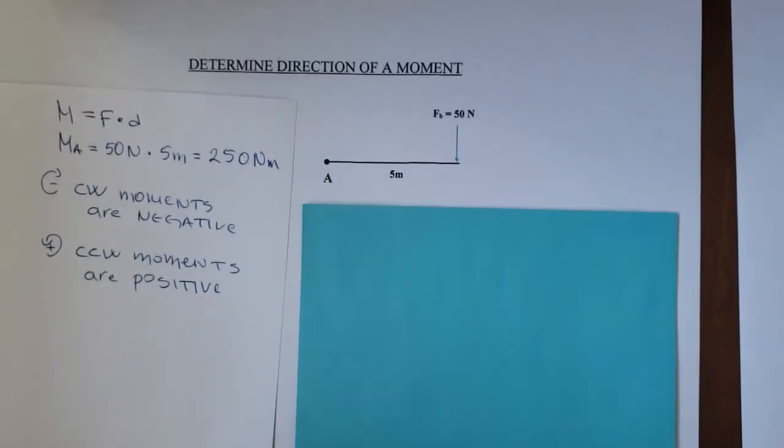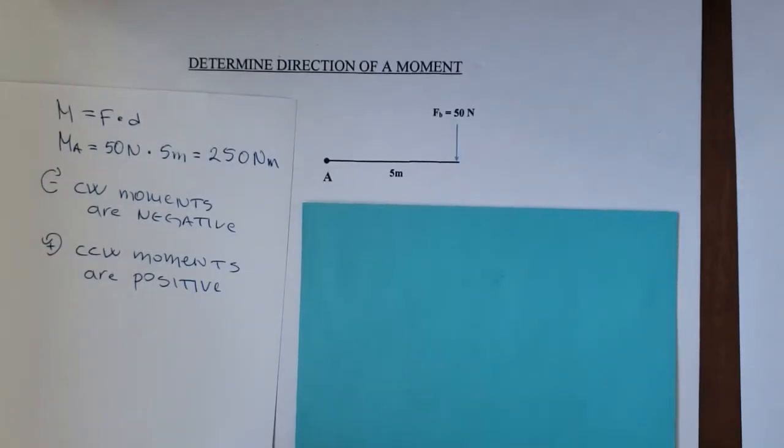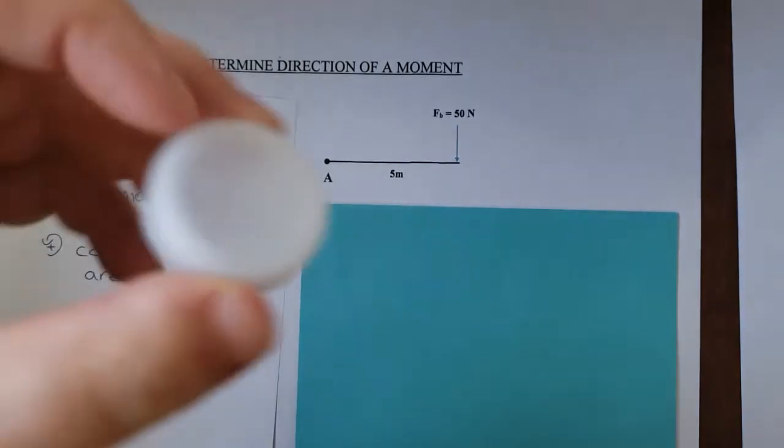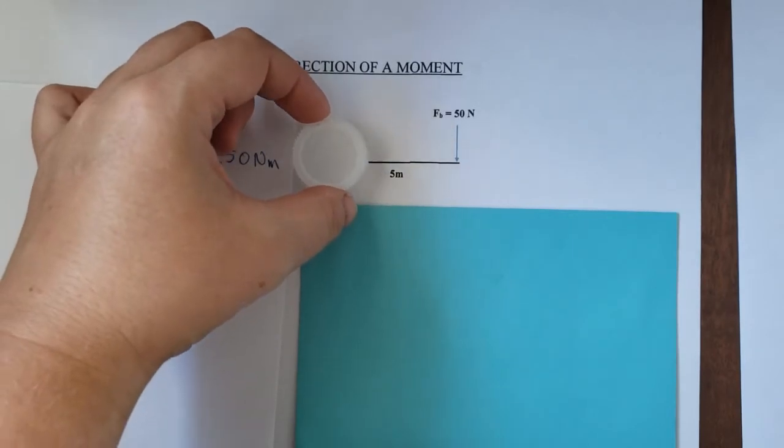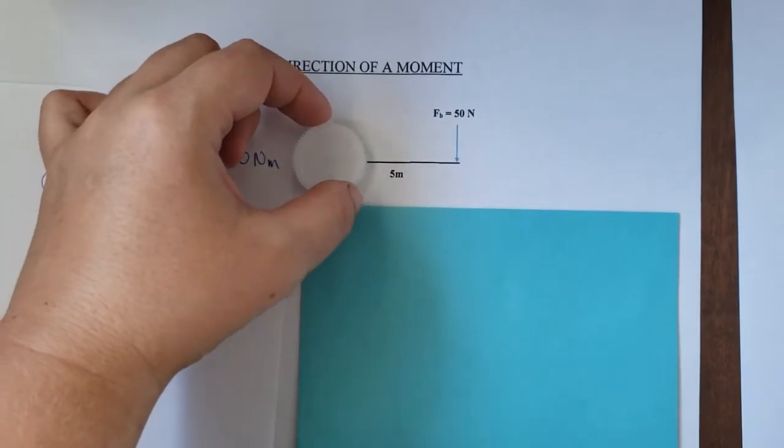So look at this now. Look how I've learned to find the direction of a moment. I have this bottle cap and I will place it over point A where the moment was taken.